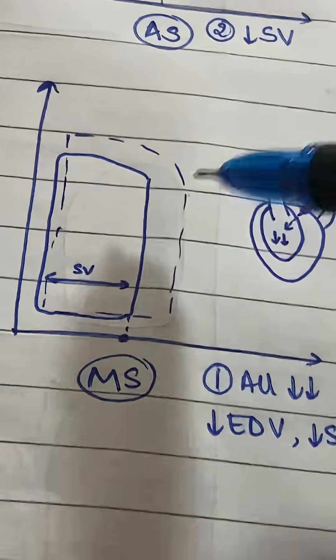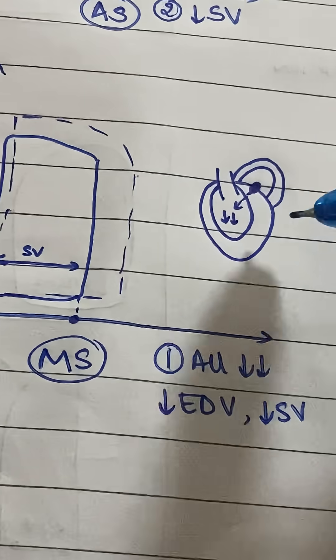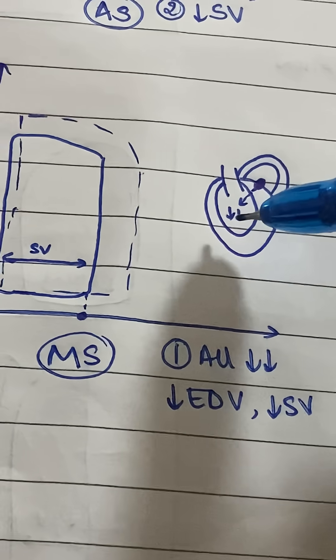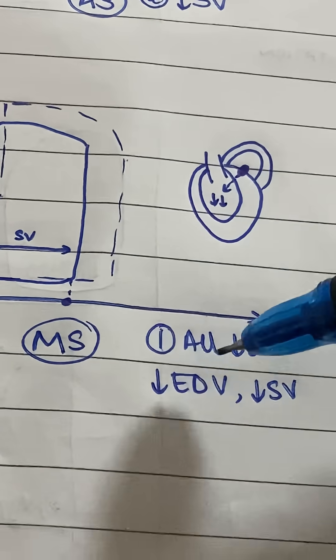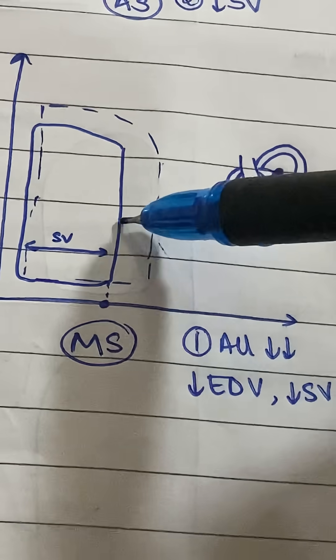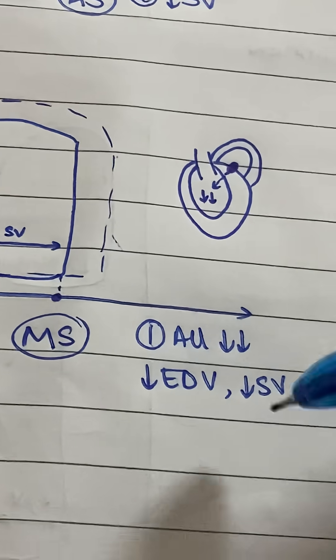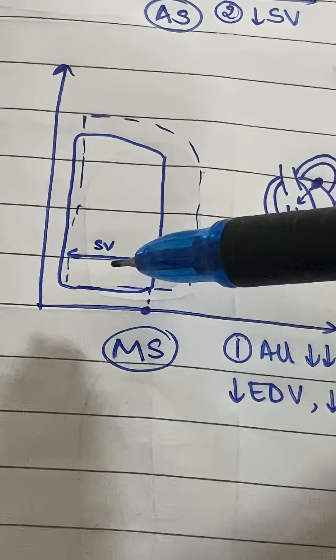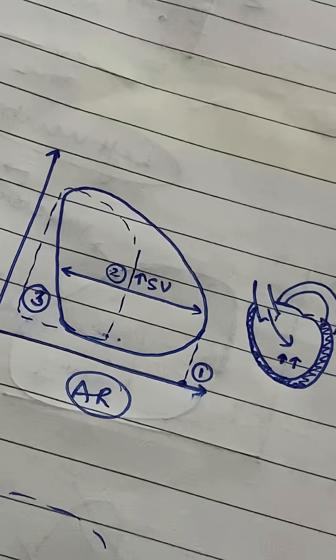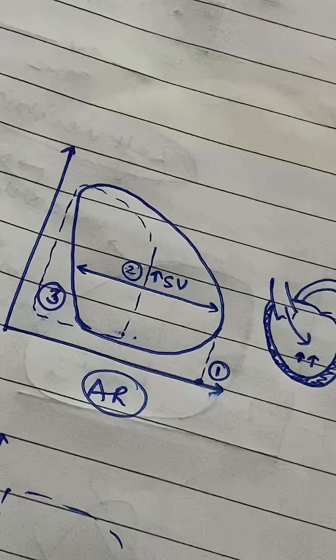The second most simple one is mitral stenosis. With mitral stenosis, just remember that everything is less. The amount of blood entering the ventricle is only so much, meaning your end-diastolic volume will be less and your end-systolic volume will also be less.